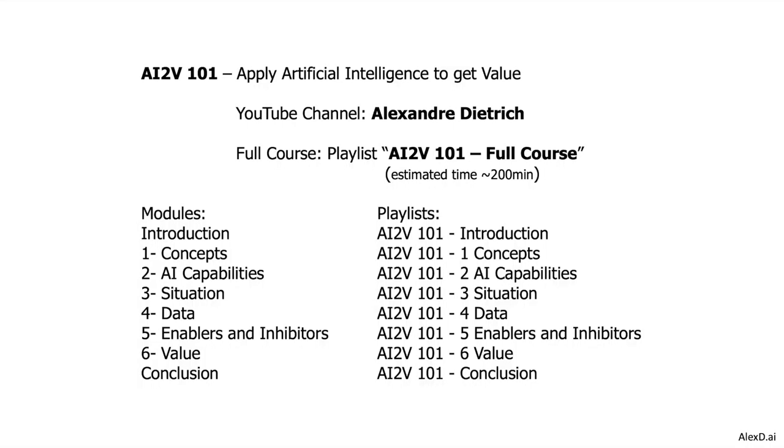For each module, there is a specific playlist. If you don't want to go through all the videos at once and prefer to go module by module, you can use these playlists. The names usually start with AI2V101 followed by the module number and topic, such as 1 Concepts, 2 AI Capabilities, 3 Situation, 4 Data, and so on.